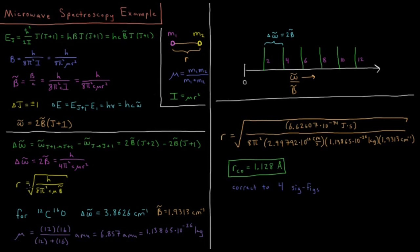Now that we have B̄ and μ, we have everything we need to find bond length R. R(CO) equals the square root of Planck's constant (6.62607 × 10⁻³⁴ J·s) divided by 8π² times (2.99792 × 10¹⁰ cm/s) — note we use c in cm/s because our values are in wavenumbers — times (1.13865 × 10⁻²⁶ kg) times (1.9313 cm⁻¹). The units work out to meters, and converting to angstroms gives a bond length of 1.128 Å.